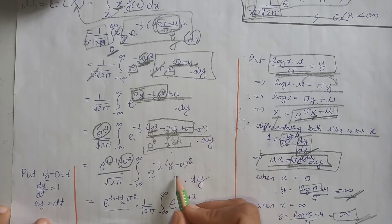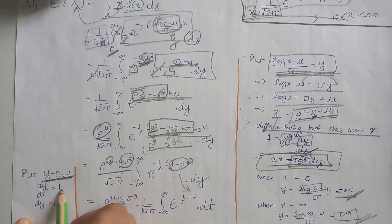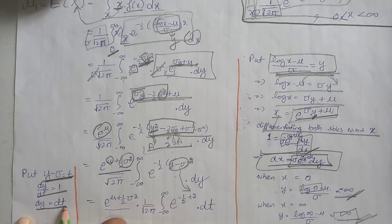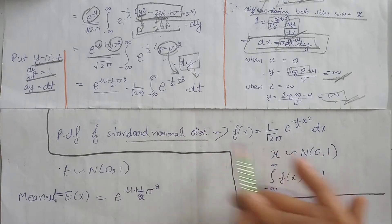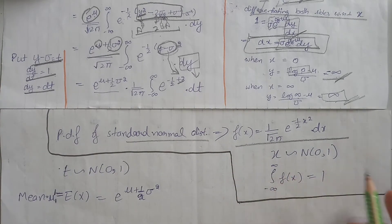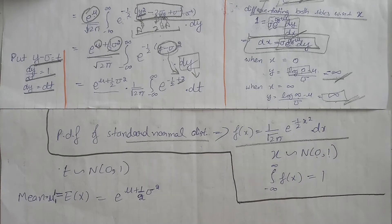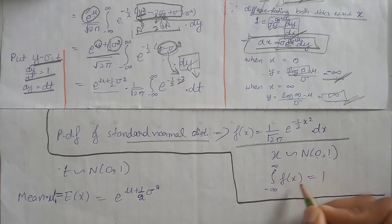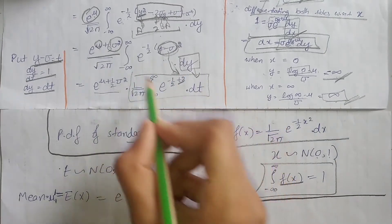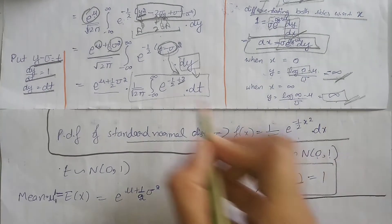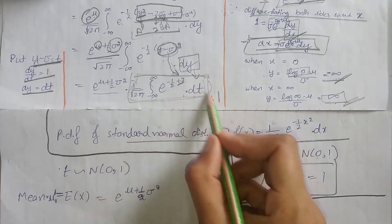To simplify further, we use the substitution t = y - σ, so dy = dt. The integrand now becomes the PDF of the standard normal distribution (μ = 0, σ = 1) expressed in t. Since the integration of any PDF from -∞ to +∞ equals 1, the integral evaluates to 1.